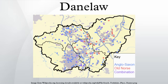Danelaw is also used to describe the set of legal terms and definitions created in the treaties between the West-Saxon king Alfred the Great and the Danish warlord Guthrum, written following Guthrum's defeat at the Battle of Eddington in 878. In 886, the Treaty of Alfred and Guthrum was formalized, defining the boundaries of their kingdoms, with provisions for peaceful relations between the English and the Vikings. The language spoken in England was also affected by this clash of cultures with the emergence of Anglo-Norse dialects.